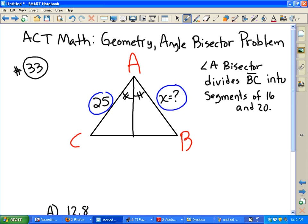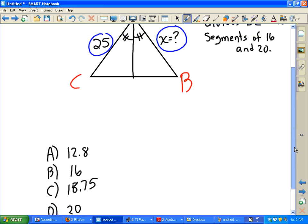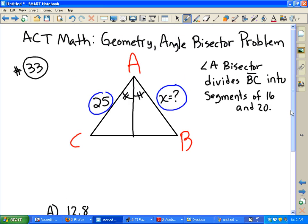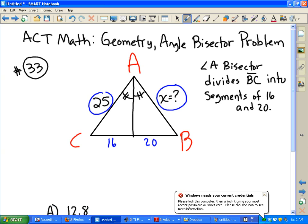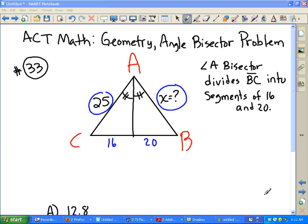Well, if BC is divided into two segments of 16 and 20, there's two possible answers. And we do have multiple choice here. We might try 16 here and 20 here. And then we can work this problem out where we'll switch them around if we don't get the necessary answer.